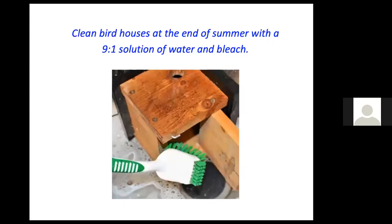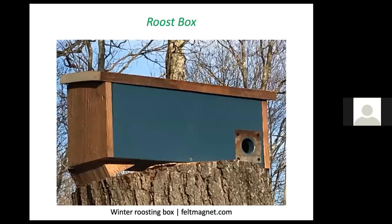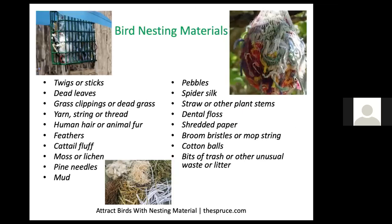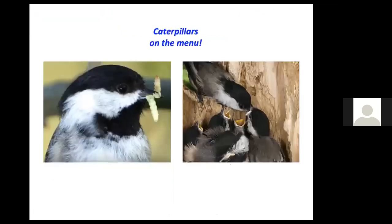At the end of summer, clean your birdhouse with a 9-to-1 solution of water and bleach and give it a good scrubbing. Consider offering a roost box during the winter — birds appreciate having a place to escape from the elements and keep each other warm. There are nesting materials you can offer birds in the spring, placed in a suet feeder or mesh bag — people often put pet fur out on a twig so birds can find it and use it in their nests. There's nothing better for chicks than caterpillars: ideal baby food because they're soft, easily digestible, and have all the nutrients chicks need to fledge.